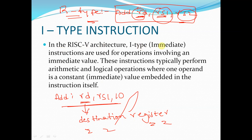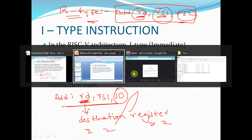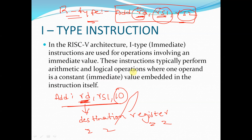In the RISC-V architecture, I-Type immediate instructions are used for operations involving an immediate value. These instructions typically perform arithmetic and logical operations where one operand is a constant and another is a register value — the constant operand is embedded in the instruction itself.